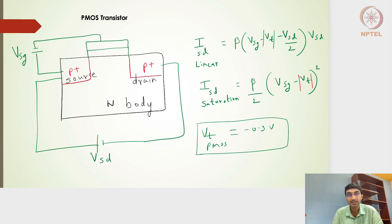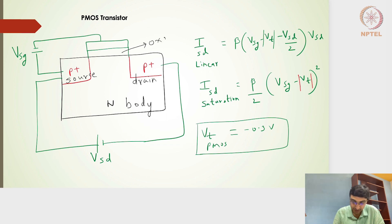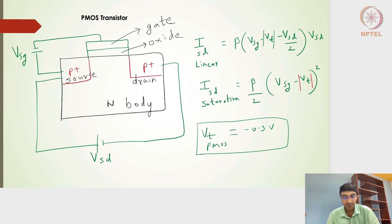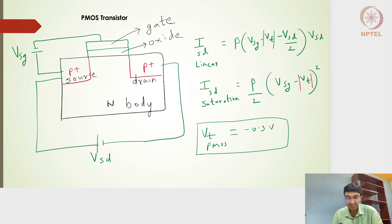For slightly more current, the source and drain are labeled as P-plus type. There is an oxide layer very similar to the NMOS transistor, and then the gate layer made up of polysilicon or metal such as aluminium. This is the cross-sectional structure of the PMOS transistor, very similar to the NMOS but with exactly opposite polarities.